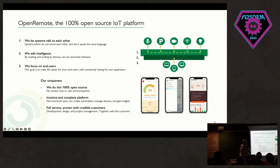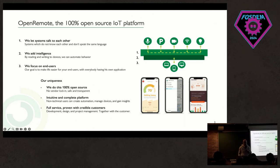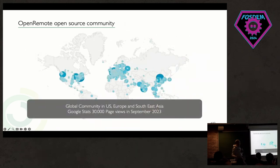Open Remote is a 100% open source IoT platform, so it would do whatever you expect from an IoT platform: connect to devices, have some logic, and have end-user interfaces. It's open source, fully free, available on GitHub, and has a community throughout the world that's pretty active.